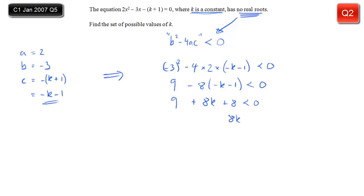I'll go ahead and expand the brackets. So we'll have 9 minus 8 times minus k, so that's plus 8k, and minus 8 times minus 1 is plus 8. And all that remains is to move the 9 and the 8 over to the other side by subtraction. So we're left with 8k is less than minus 17. Divided by 8, k is less than minus 17 over 8. And that's it. Job done.